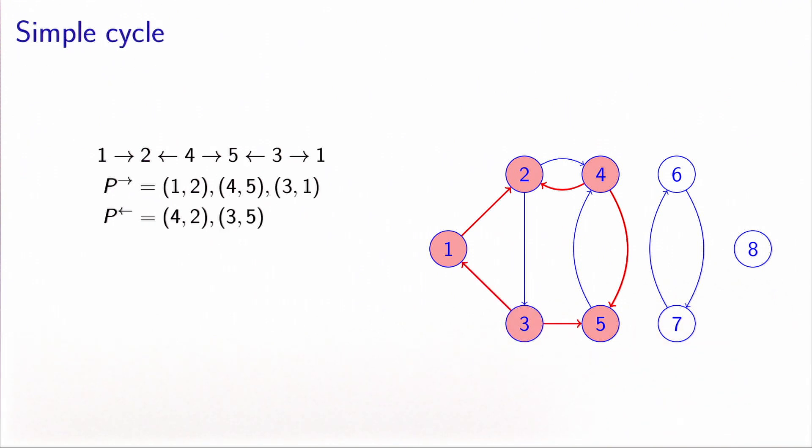When a path begins and ends at the same node, we call it a cycle. So here, we have an example of a cycle that starts at node 1 and finishes at node 1.